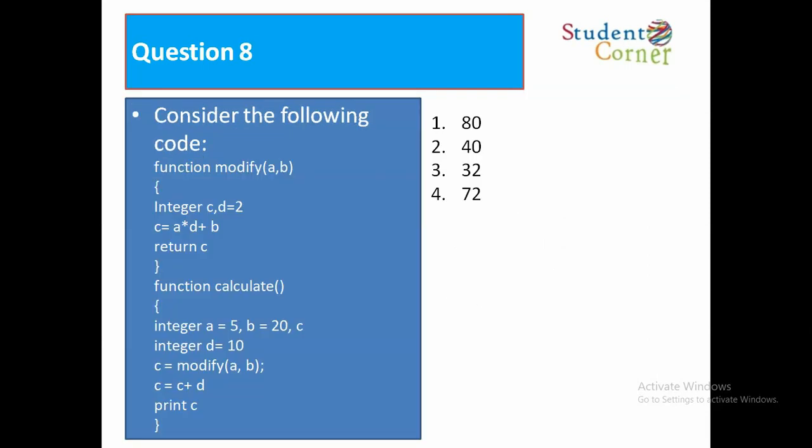Question number 8. Consider the following: Function modify(a, b): integer c, d equals 2. c equals a times d plus b. Return c. Function calculate: Integer a equals 5, b equals 20, c. Integer d equals 10. c equals modify(a, b). c equals c plus d.